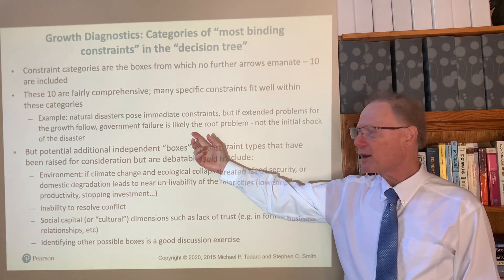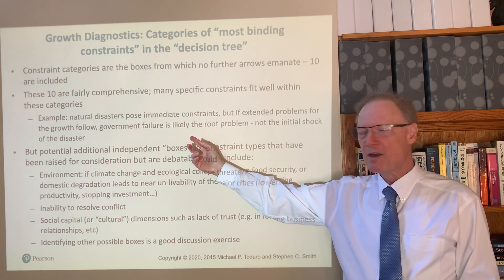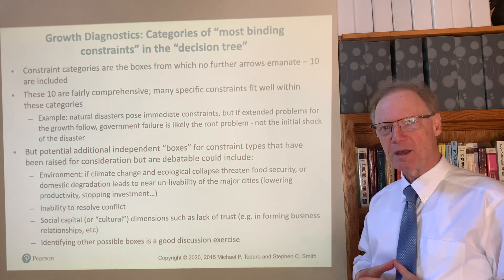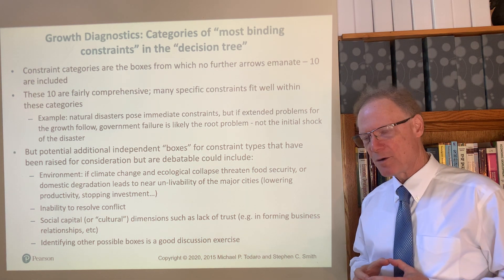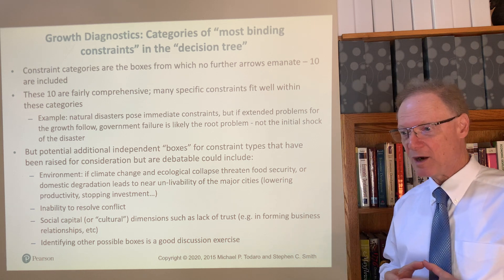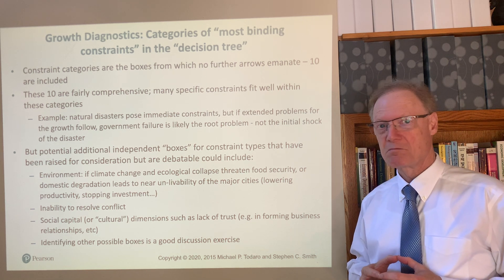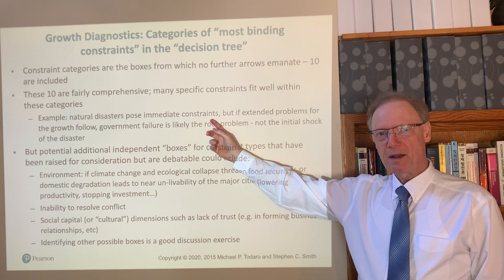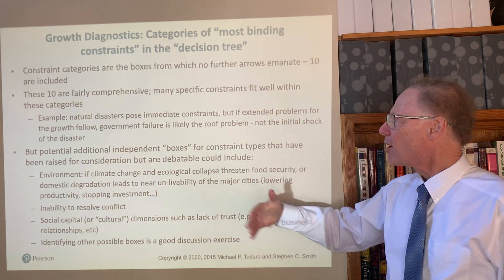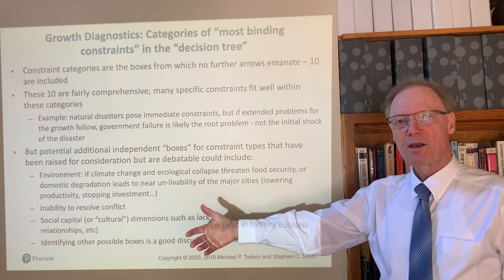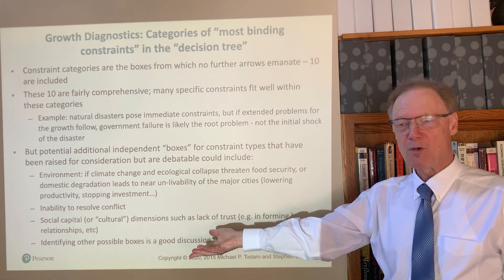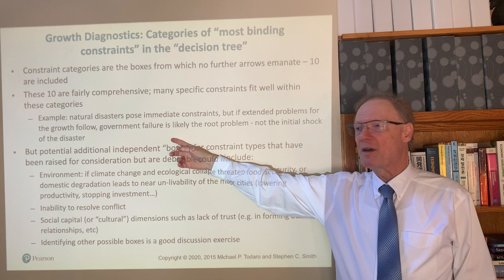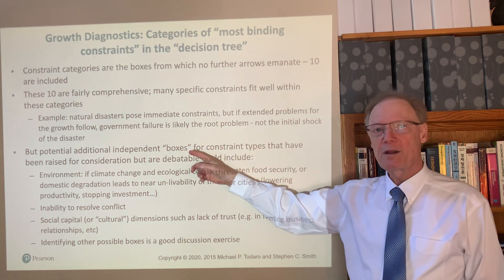Here's an example. It's perhaps common for people to look at the constraints and say, well, wait a minute — I see natural disasters affecting developing countries quite often: earthquakes, cyclones, perhaps even the COVID pandemic. So natural disasters certainly pose immediate constraints. But if there are extended problems for investment and growth and development more broadly that follow, very possibly it's government failure that is at root here, not the initial disaster.